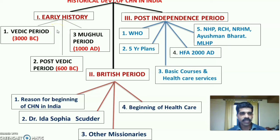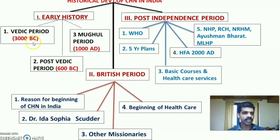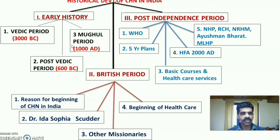Early history is again classified into three different periods: the Vedic period (3000 BC), the post-Vedic period (600 BC), and the Mughal period (1080 AD).